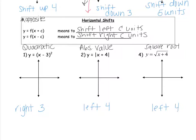For number one, you should have a quadratic as the basic graph. We're shifting it to the right three — one, two, three — place the new vertex and draw the new picture. For number two, draw your absolute value function first, then shift left four — one, two, three, four — and draw another absolute value graph at the new position.